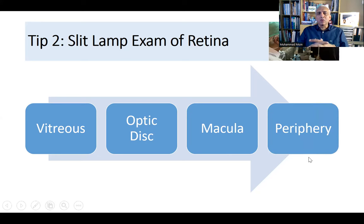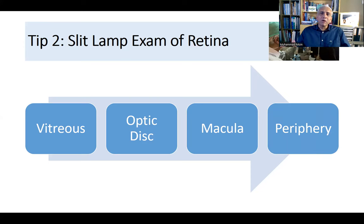The examiner may ask you to make a drawing of the case. For macular degeneration, recognize the dirty green appearance of the subretinal neovascular membrane. Know the difference between a subretinal hemorrhage — where vessels cross above it — and a pre-retinal hemorrhage, where the vessels are obscured. Then examine the peripheral retina; students often miss proliferative diabetic retinopathy if they don't look peripherally.